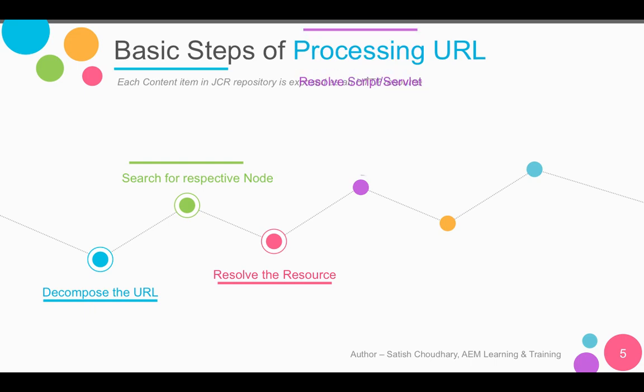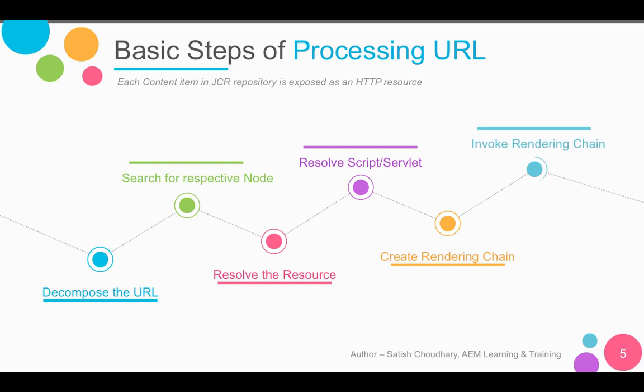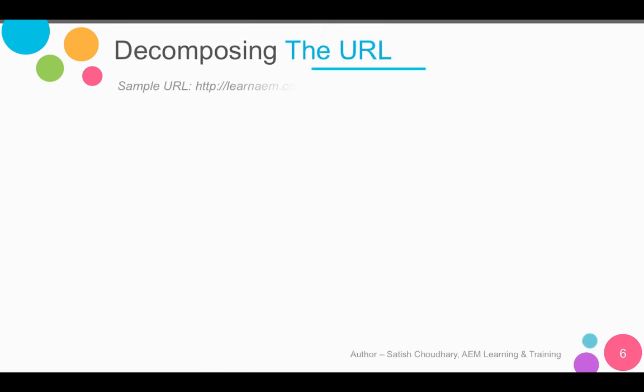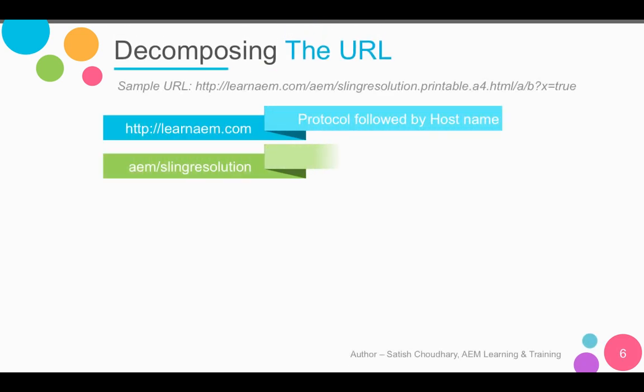A basic URL request goes through multiple processes. To start, we decompose the URL and then search for the respective nodes, identify the resources, resolve the script or servlet, create the rendering chain, and finally invoke the rendering chain. We'll discuss each item in detail as part of the next slide.